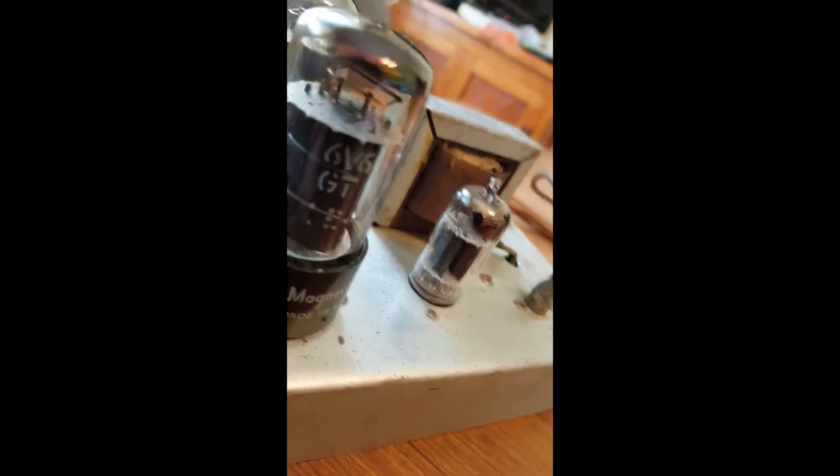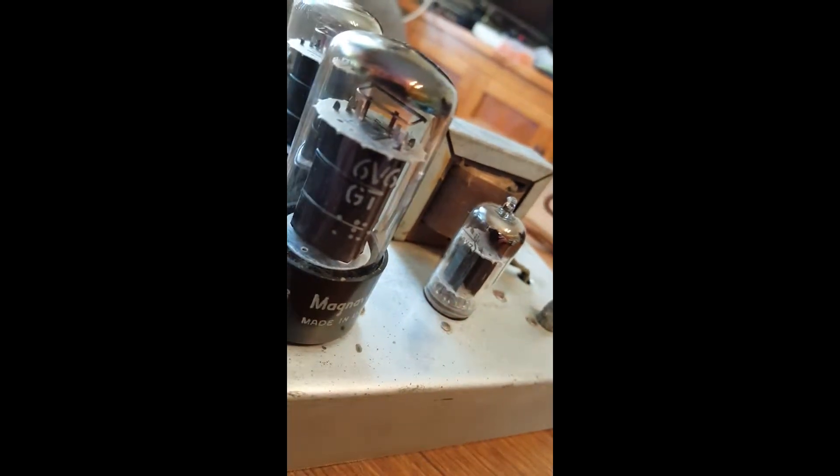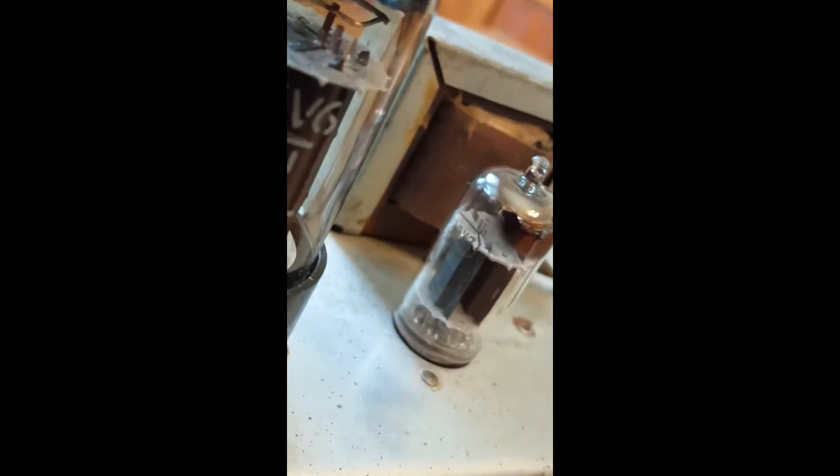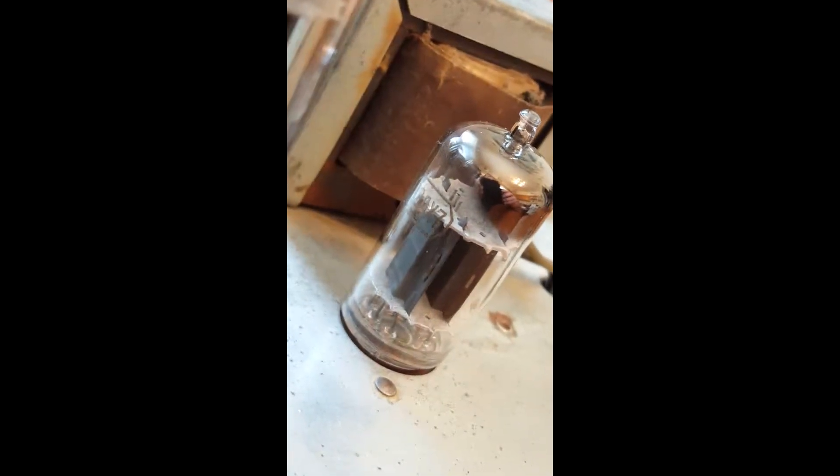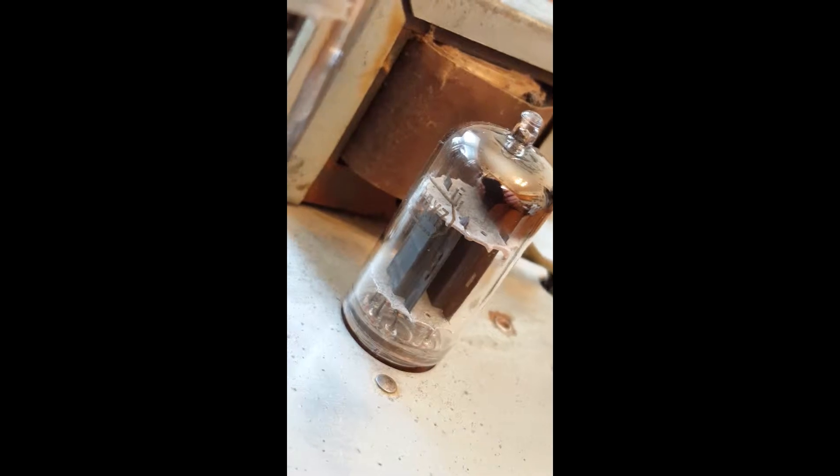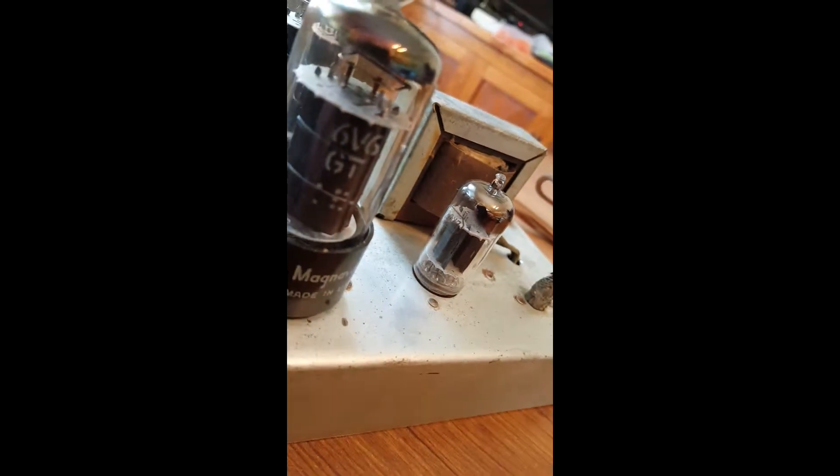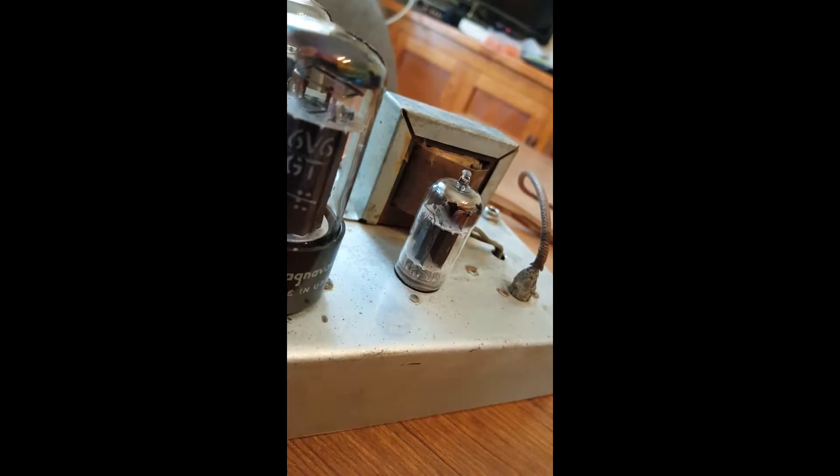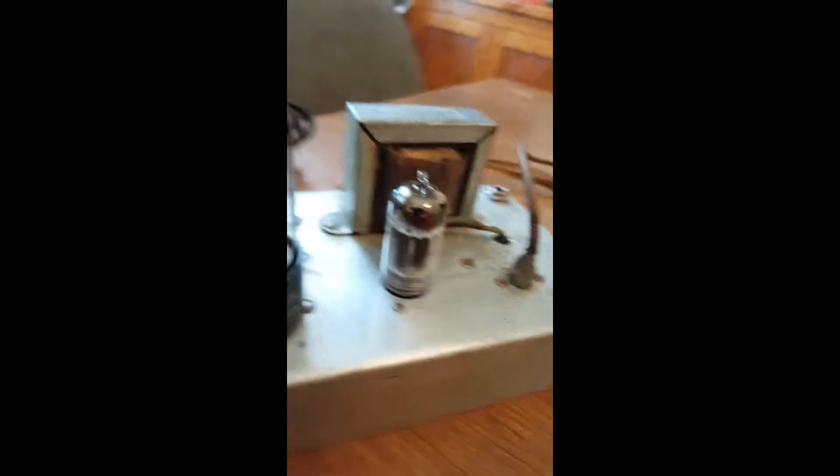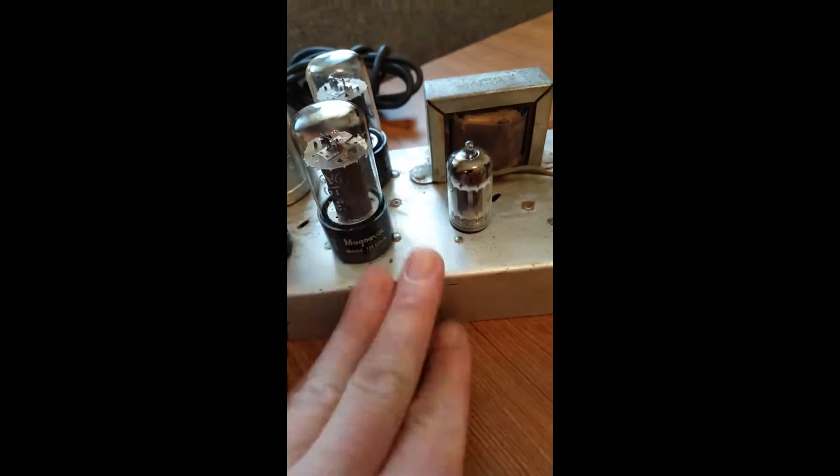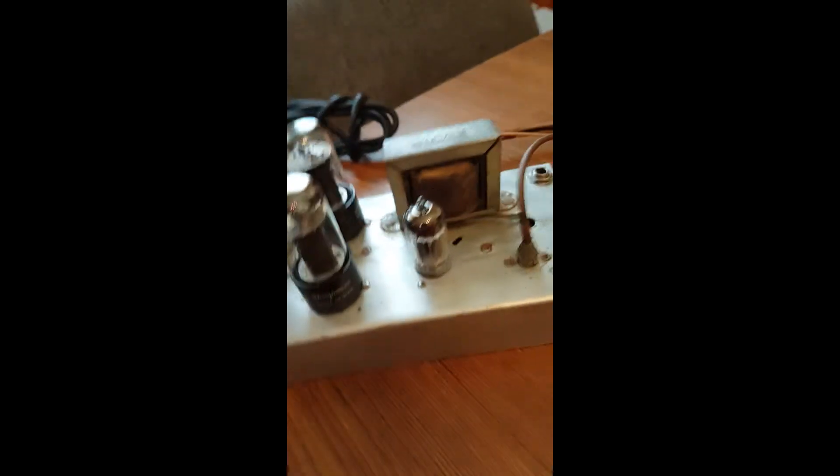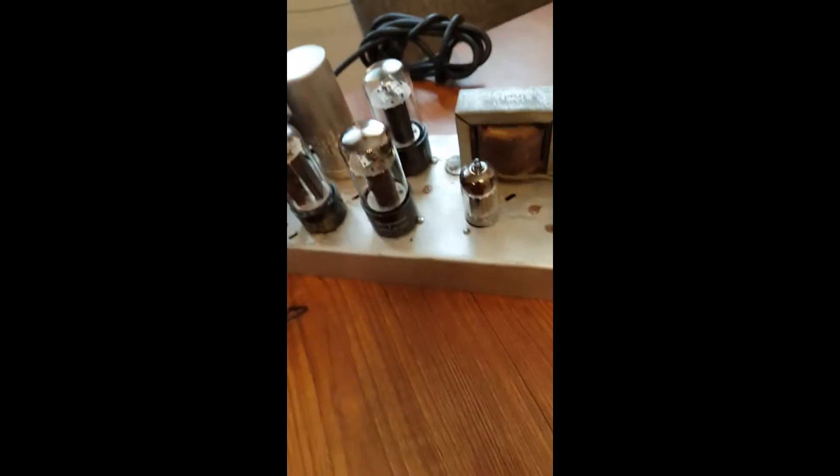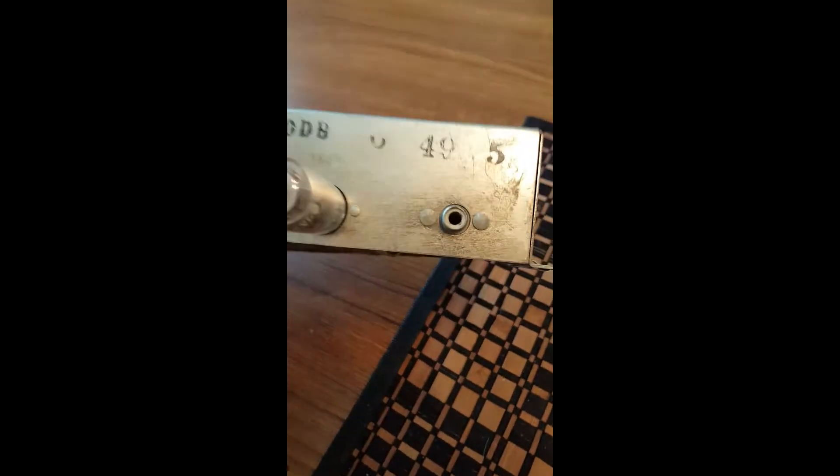And then this is the original 12AX7 Tung-Sol. Every time I got a Tung-Sol in the 12AX7, the labeling was always gone on these little 130s. So I did a little messing with it.